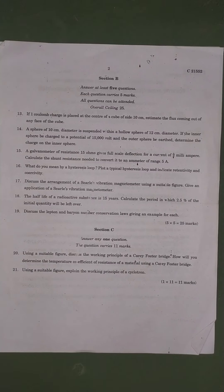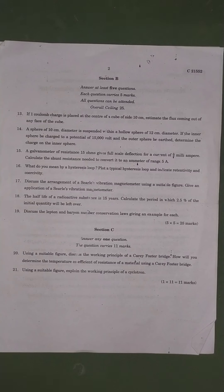15th question: A galvanometer of 15 ohms gives full scale deflection for a current of 2 milliampere. Calculate the shunt resistance needed to convert it into an ammeter of range 5 ampere.